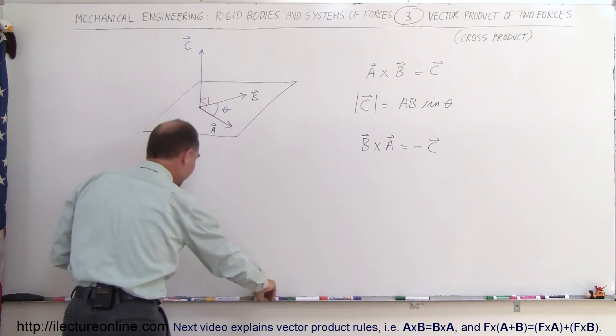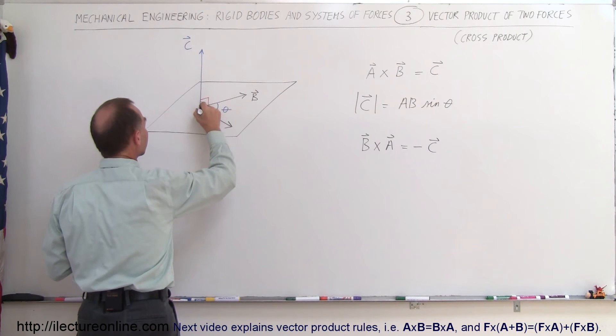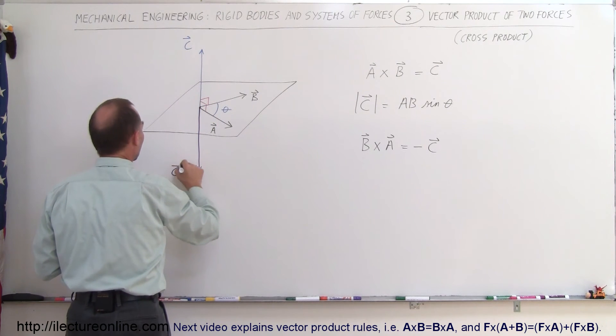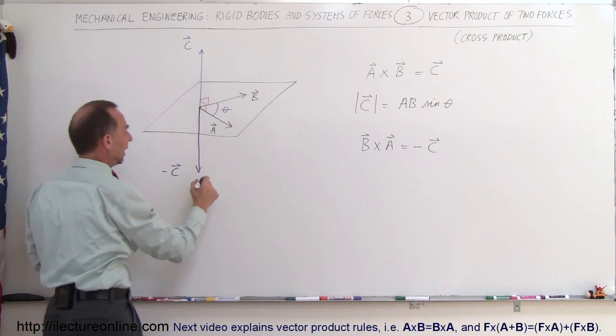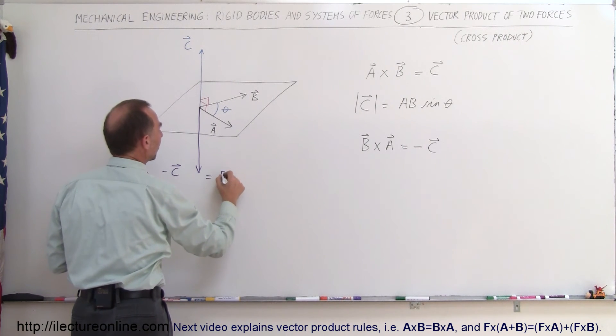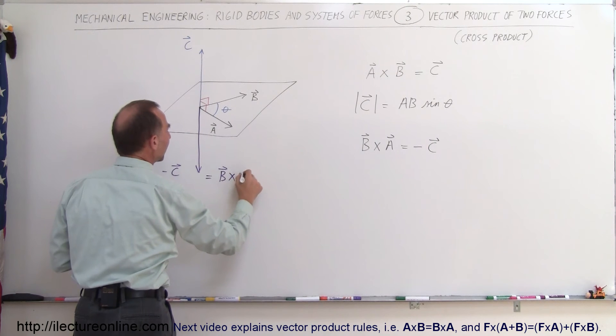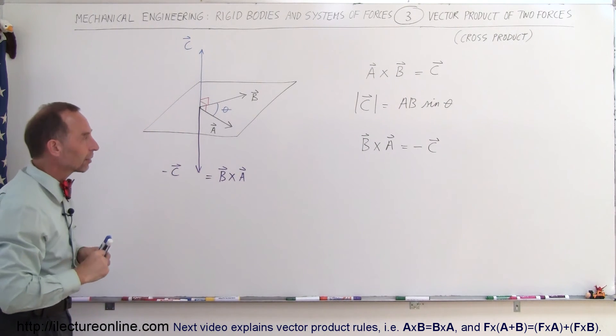In other words, we then get a vector in the opposite direction like this. This is vector C and of course it's a negative direction so we'll put a negative in front of it and so this is equal to the resultant of B multiplied times A in reverse using the vector product.